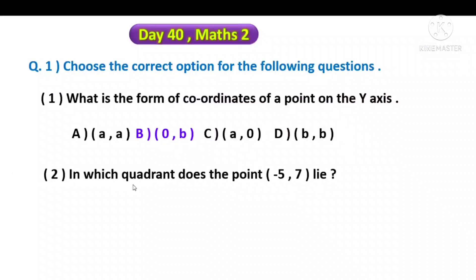Second question: In which quadrant does the point (-5, 7) lie? The point (-5, 7), x is negative and the second coordinate is positive - minus and plus. So which quadrant will it be in? Second quadrant. These four quadrants are there. Second quadrant means option C is the answer.